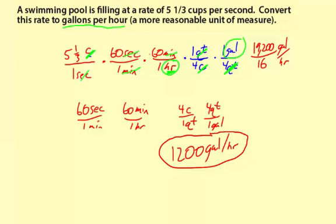If the long fraction is confusing, you can just take it one step at a time. You would break it into steps: take five and one-third cups per second and multiply by 60 seconds per minute — that gives you cups per minute. Then multiply by 60 minutes per hour — that gives you cups per hour. Then multiply by one quart per four cups — that gives you quarts per hour. Then multiply by one gallon per four quarts — and that gives you gallons per hour.